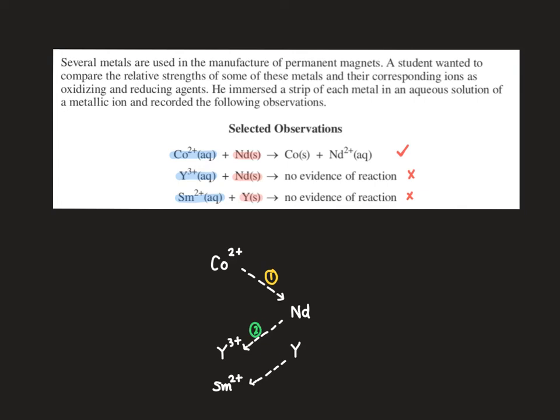I'm going to use just a slightly different color so we don't get confused. So cobalt 2 plus will gain two electrons to form cobalt solid. Neodymium's counterpart will be neodymium 2 plus which will gain two electrons. Yttrium will gain three electrons to form yttrium solid, and samarium will gain two electrons to form samarium solid.